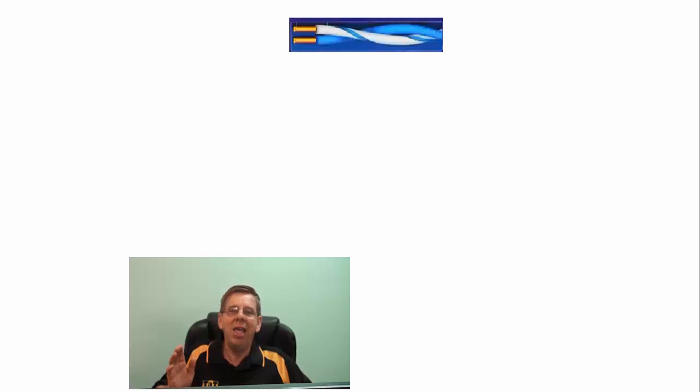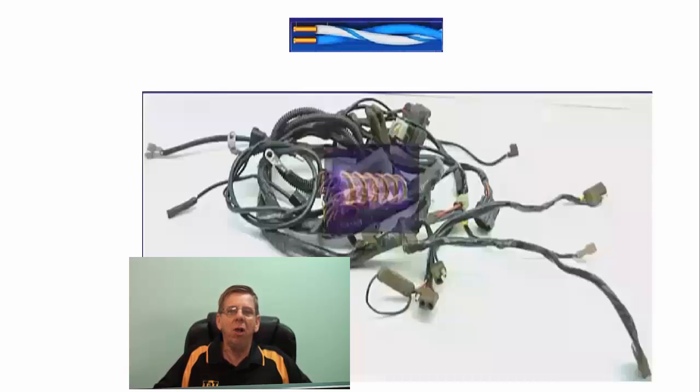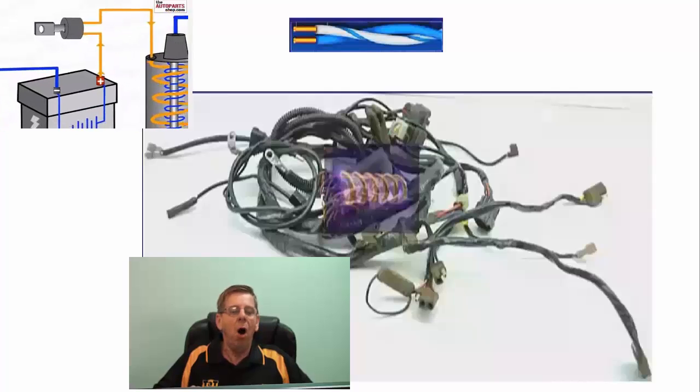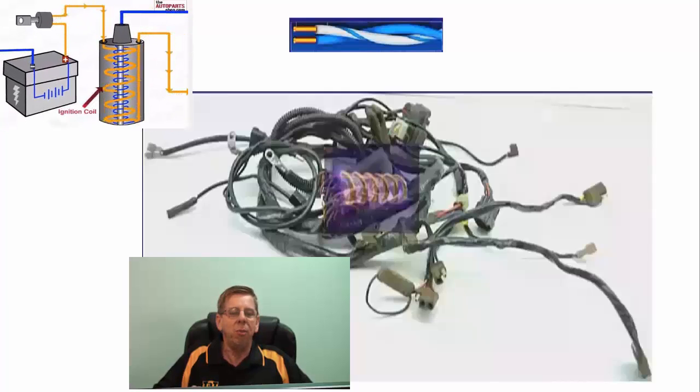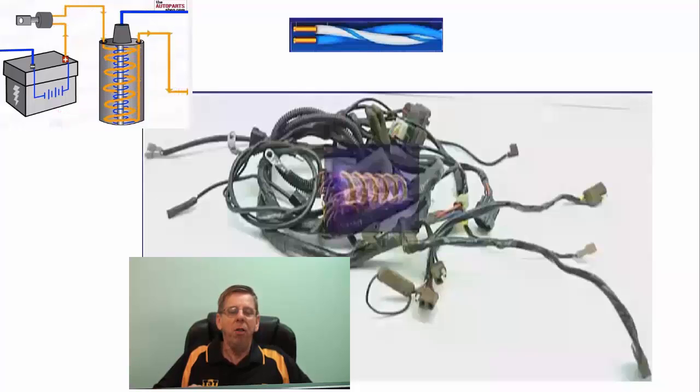The wires are twisted to cancel out EMI, electromagnetic interference. Due to many circuits such as the ignition coils, the injectors, where high levels of electromagnetic radiation is present, this electromagnetic noise will be introduced into both the twisted wires.